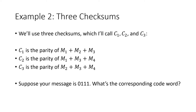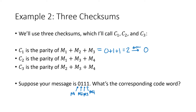So if our message is 0, 1, 1, 1, that means m1 = 0, m2 = 1, m3 = 1, and m4 = 1. My first check digit c1 is the parity of m1 + m2 + m3, which is 0 + 1 + 1 = 2. Since 2 is even, my first check digit is 0. Remember, for a parity checksum, even gives you 0 and odd gives you 1.